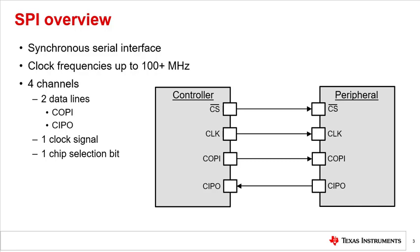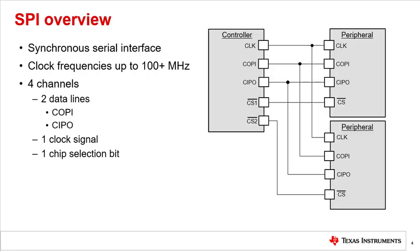This figure shows a four-lane, one-to-one, controller-to-peripheral configuration. Here we see how multiple peripheral devices may be connected to one controller. This configuration may also include multiple chip select lines for each peripheral device from the controller. Configurations with multiple controller devices are also possible.